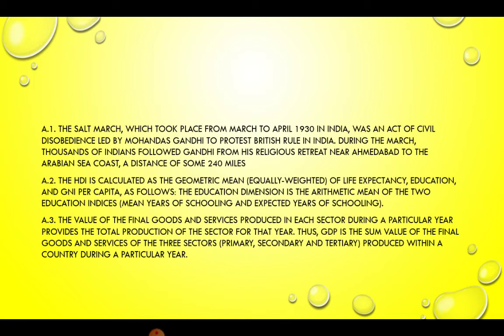Answer 2. The HDI is calculated as the geometric mean, equally weighted, of life expectancy, education, and GNI per capita. The education dimension is the arithmetic mean of the two education indices: mean years of schooling and expected years of schooling.